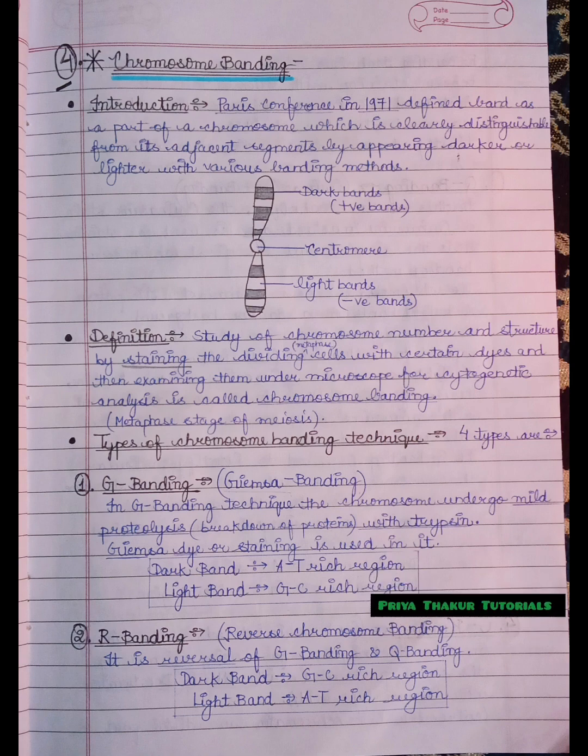The second type is R banding. R banding refers to the reverse chromosome banding and it is the reversal of G banding and Q banding. In R banding technique, the dark band represents the GC rich region and the light band represents the AT rich region.